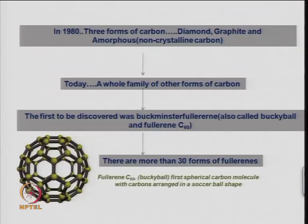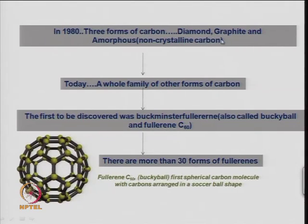Fullerenes, as some of you must have heard, was discovered in 1985, but previous to 1985 there were also reports about it. We will discuss the historical development of this nanostructure called fullerenes. Normally carbon has 3 allotropic forms: diamond, graphite, and amorphous or non-crystalline carbon. Today we know of many other forms of carbon, and among them, the first to be discovered among these new forms is the C60 molecule, also called the buckyball and also called fullerene.